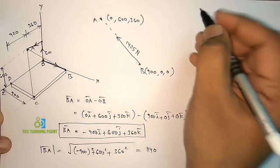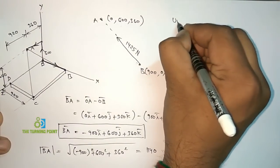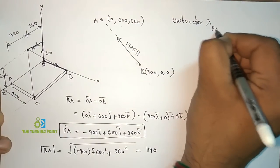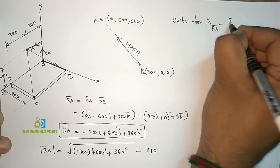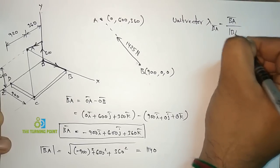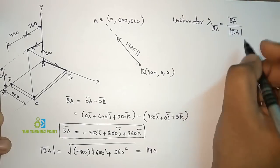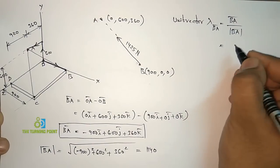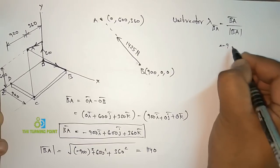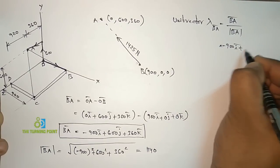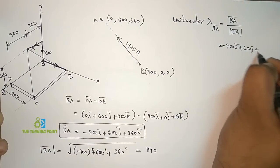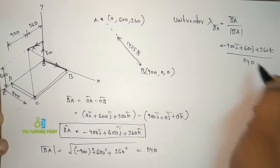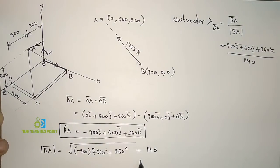Next, I will calculate the unit vector. The unit vector λBA is the position vector divided by its magnitude: λBA = (−900i + 600j + 360k) / 1114.0.